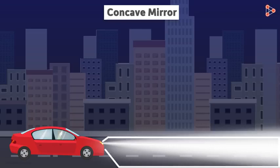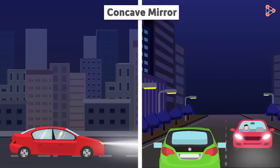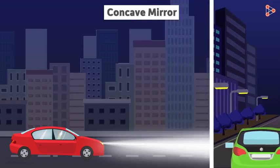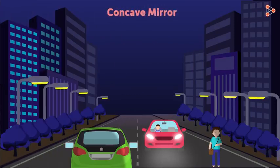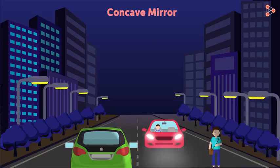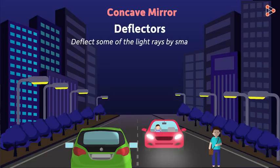This solves our purpose of viewing cars or things at quite a distance away. However, in reality, we don't really want all the rays to be travelling parallel after reflection — we also want some rays to travel a bit sideways. We not only want to see the road ahead, but also things along the sides, which helps us see vehicles coming from the opposite direction. For that purpose, we use what are called deflectors, which deflect some of the light rays by smaller degrees.